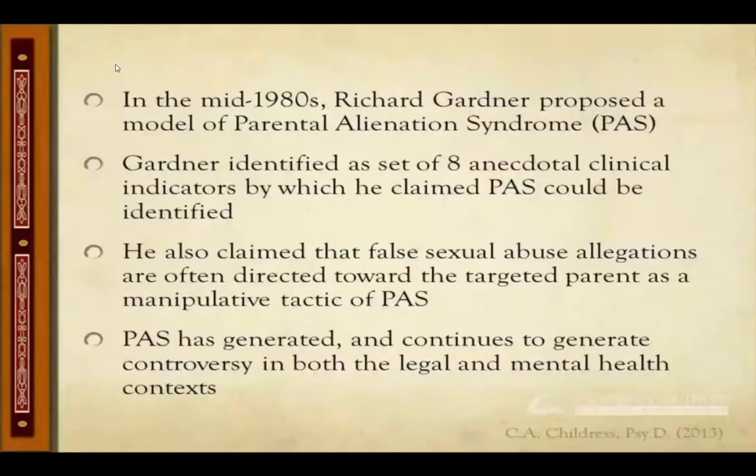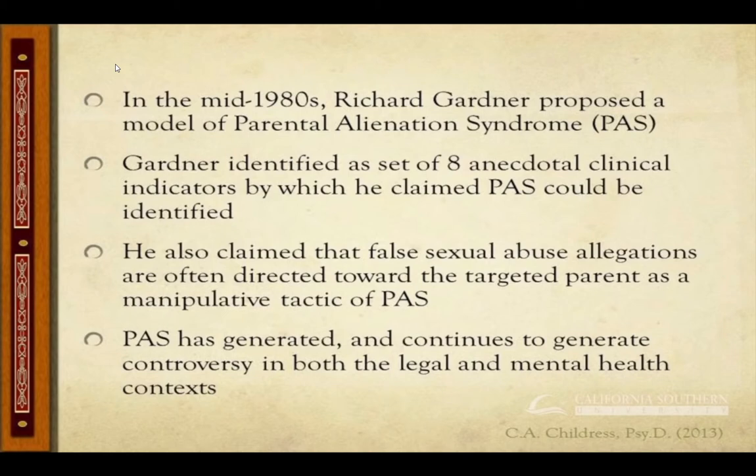In the mid-1980s, a psychiatrist, Richard Gardner, proposed a model. He recognized a clinical phenomenon having to do with what he called parental alienation, and he proposed a model by which it could be identified. He referred to it as parental alienation syndrome, and he discussed a set of anecdotal clinical indicators by which it could be recognized. He also went into describing how oftentimes in these situations there are false allegations of child abuse involved.